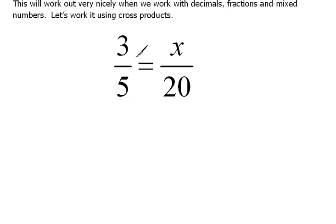So first of all, we'd have to look at the cross product. If you'll remember, we multiply diagonally, so that would be 3 times 20 is supposed to equal the 5 times this missing number.